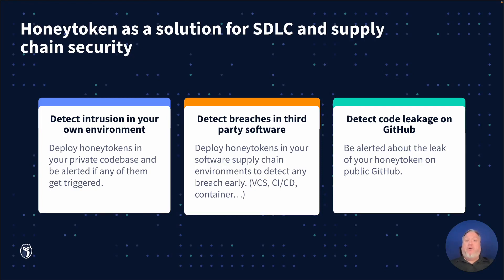or any other internal collaboration tools can help detect intrusion faster. You can also plant Honey tokens in your SaaS vendor systems to be alerted if a core vendor in the supply chain has been compromised.